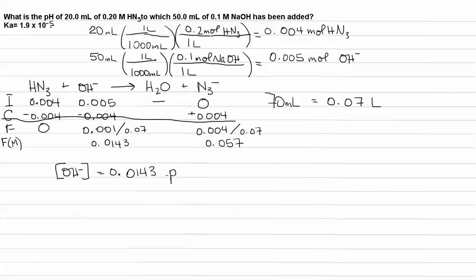From that, we can determine the pOH. The pOH is the negative log of the concentration of hydroxide. So, that means it's the negative log of 0.0143. That means that our pOH equals 1.84. And the pH is 14 minus the pOH, giving us a pH of 12.16.